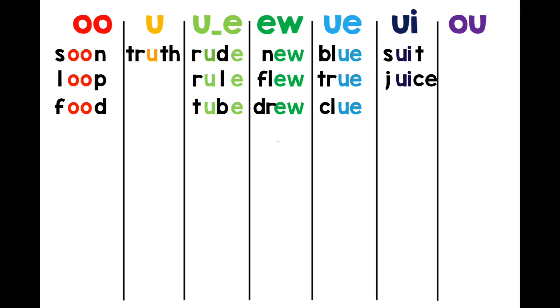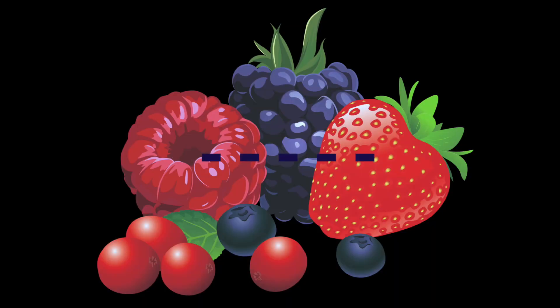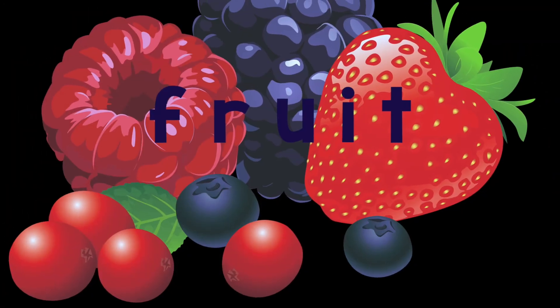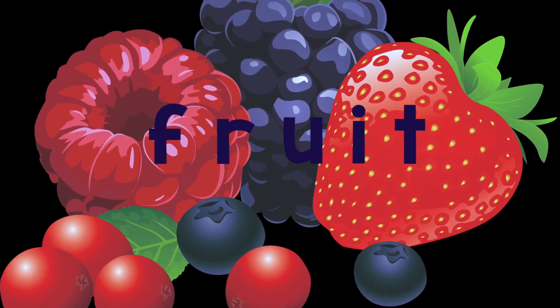Now I will show you a picture. See if you can spell the word that matches the picture. Can you go five for five? Fruit. Berries are a delicious fruit. Check your spelling. How did you do?